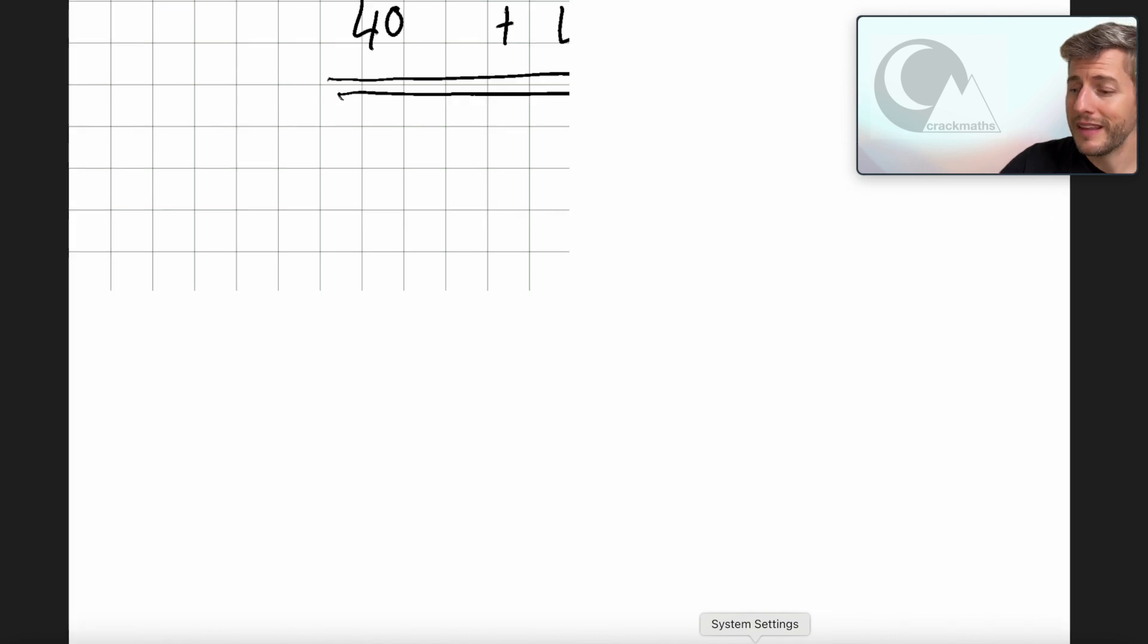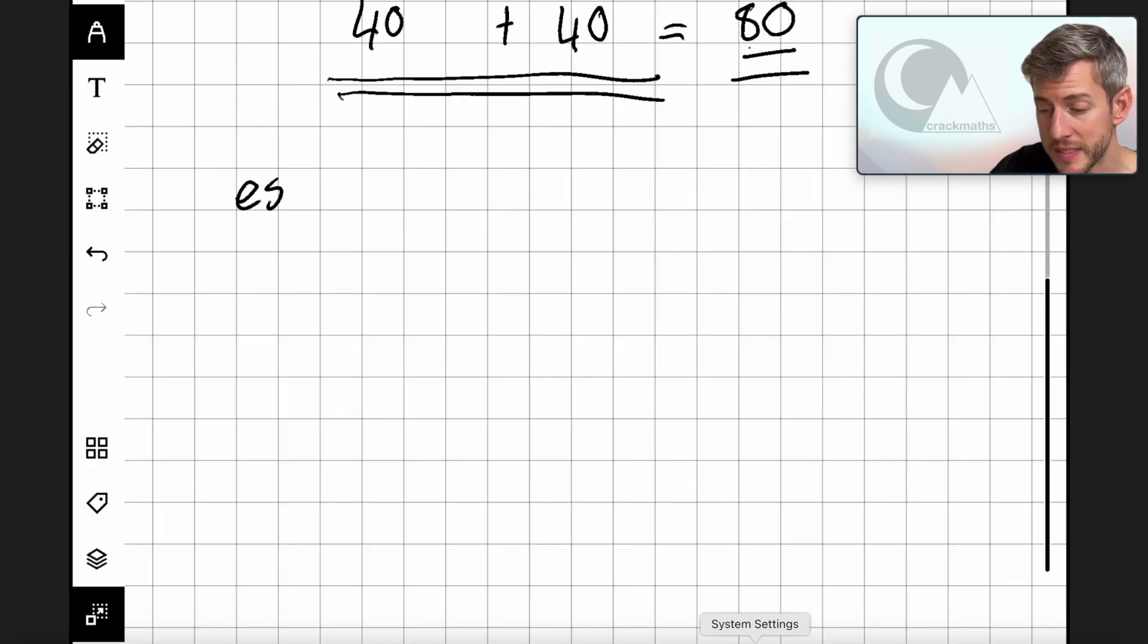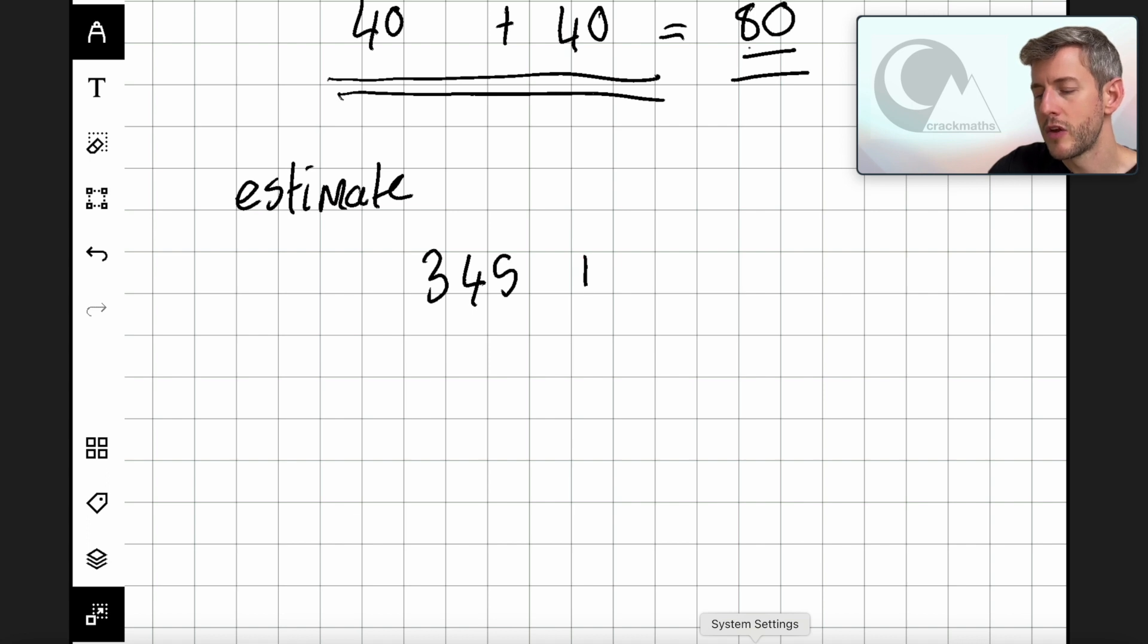So let's say we've got a question which says estimate 345 plus 59. In this question, I'm going to say that 345 is roughly 300, and 59 is roughly 60. So I'm going to say that the answer to this is going to equal 360.